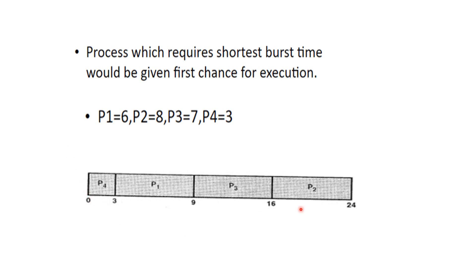This representation is a Gantt chart, where the x-axis represents time and the y-axis represents the activities completed. In the Gantt chart for SJF: P4 executes first for 3 seconds, then P1 for 6 seconds (total 9 seconds), then P3, and finally P2 — with a total elapsed time of 24 seconds after all four processes complete. This Gantt chart representation shows the scheduling order based on shortest burst time.